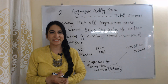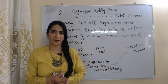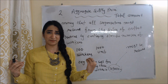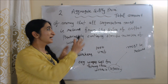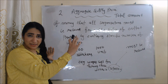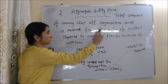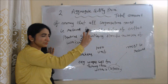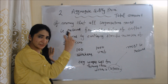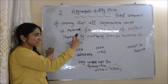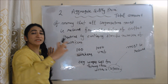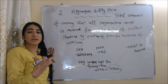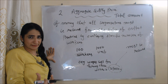Now we are going to talk about aggregate supply price. What is aggregate supply price? Aggregate supply price is the total amount of money that all organizations must receive from the sale of output that is produced by a specific number of workers.